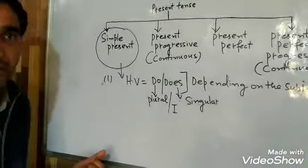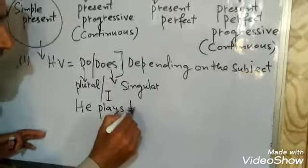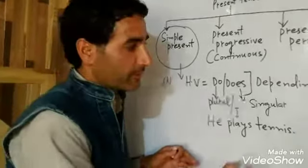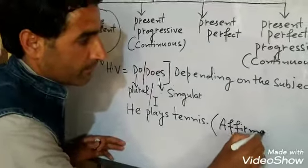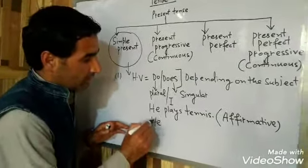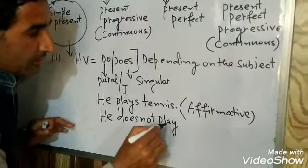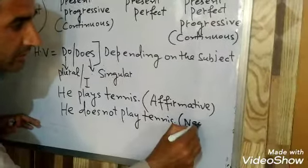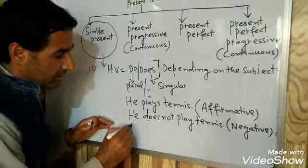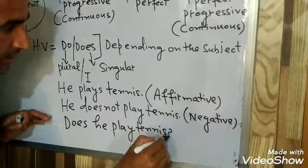Now I will take an example. 'He plays tennis.' This is an affirmative sentence. Now I want to change this sentence into negative: 'He does not play tennis.' This is a negative sentence. I can also change it into interrogative: 'Does he play tennis?' This is an interrogative sentence.